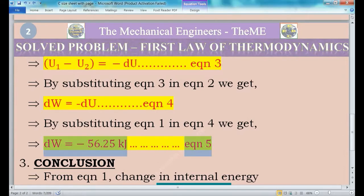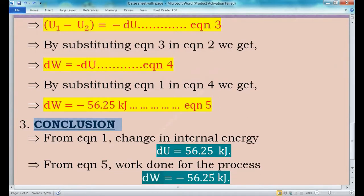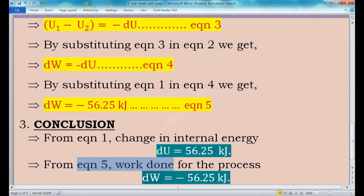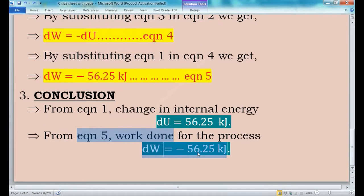Now the conclusion: equation 1 gives the change in internal energy, dU = 56.25 kJ. Equation 5 gives the work done, dW = −56.25 kJ. These two values are the answers for this question.